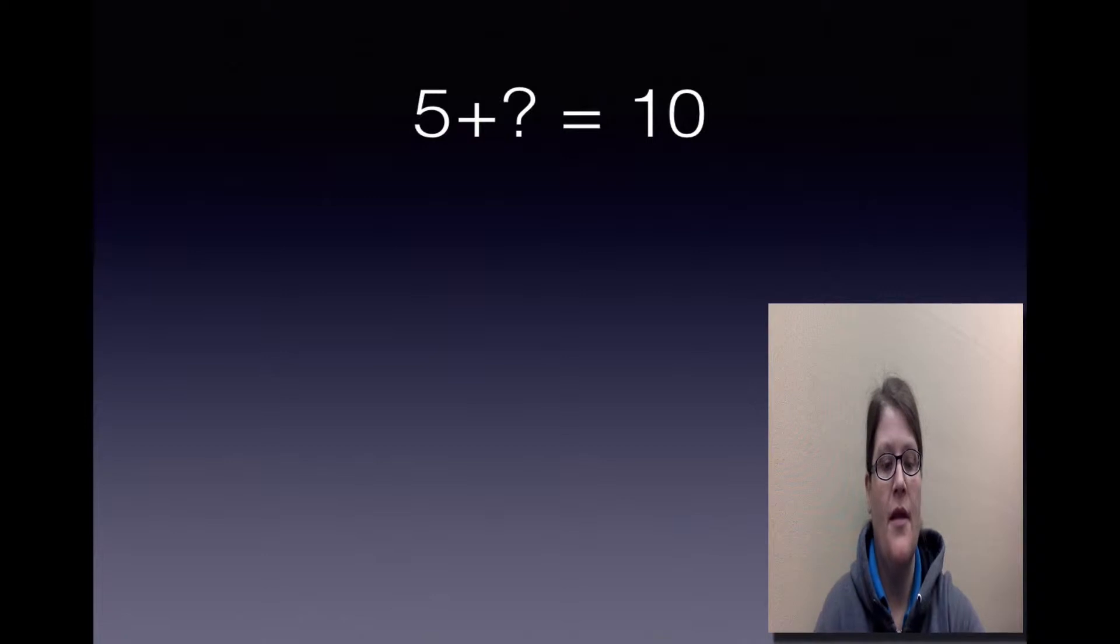For example, if I have 5, that's an addend that I know. I'm trying to find what is this missing addend. I can count on until I get to 10, because that's the sum. So 5, 6, 7, 8, 9, 10.